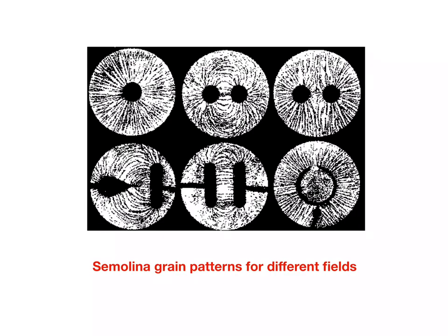Shown here are semolina grain patterns for different electric fields. From top left to bottom right: first, the field of a point charge with field lines emanating gradually away from it; then the field of two charges with opposite polarity — a dipole field; then the field associated with two like charges facing each other. Starting at the bottom right: the field of a tip facing a plate; next to it the electric field of two parallel plates; and finally the field-free interior of a ring electrode with exterior field lines going to infinity.